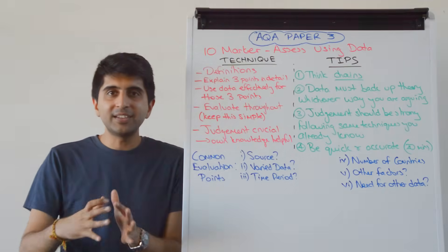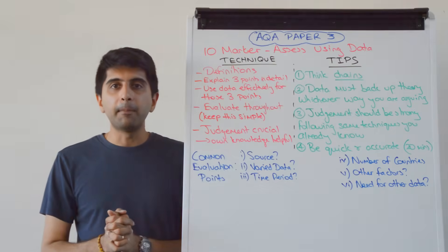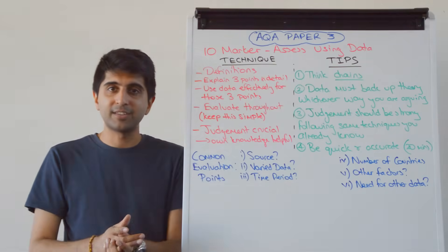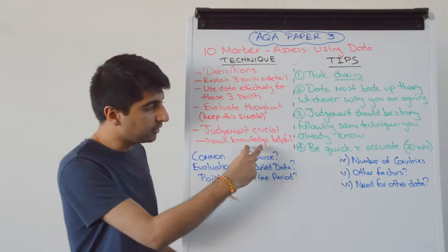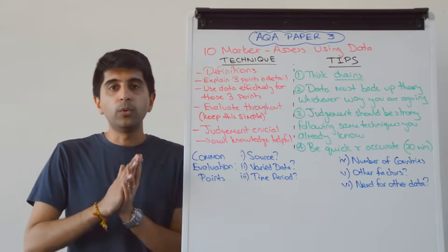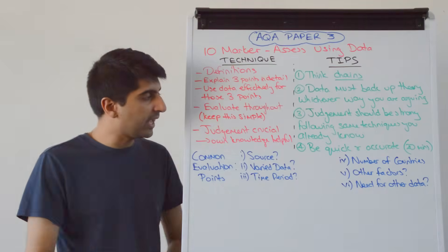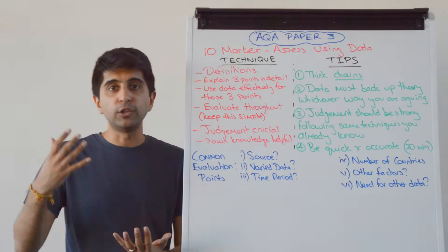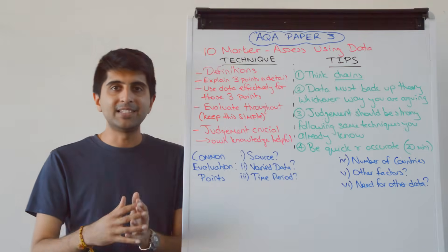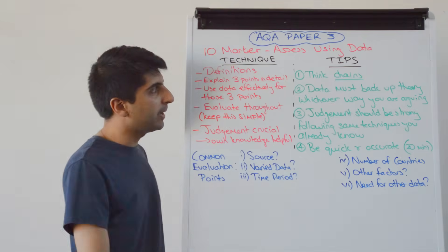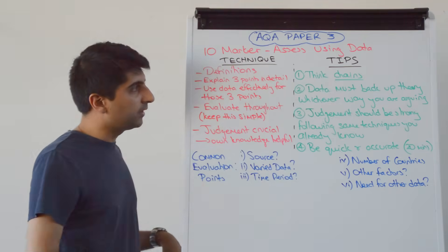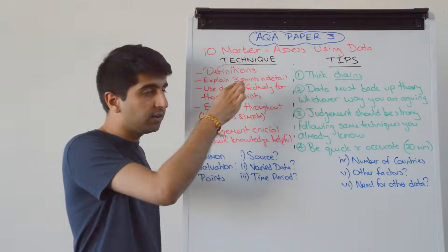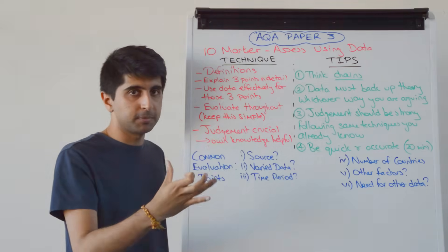It's not just the data material that can help you make a judgment. Your own knowledge, if you know something about whatever the question is asking, is very helpful too — especially if the question is UK-based. You can answer the question using your own knowledge as well as the source data. So the structure is: definitions, three points with data across three paragraphs, evaluation in each paragraph, and then a strong judgment to finish.